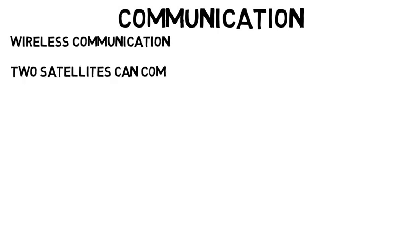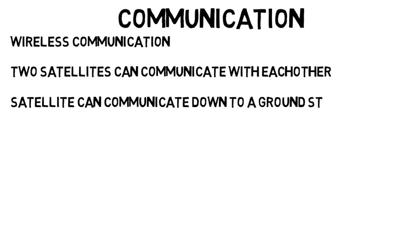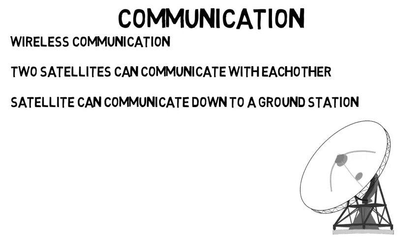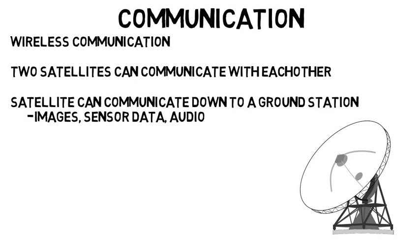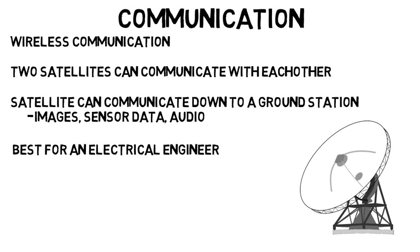Communications is about wireless communication so that maybe two satellites can communicate with each other, or a satellite can communicate down to a ground station to provide information, whether it be images, sensor data, or audio from someone talking. Communications is included because at some schools aerospace students may learn some of it, but usually in the real world this would be best for an electrical engineer or similar discipline.